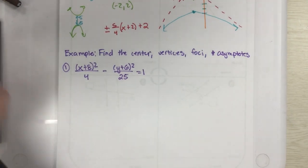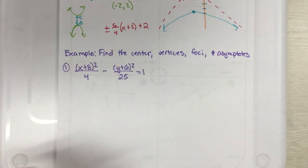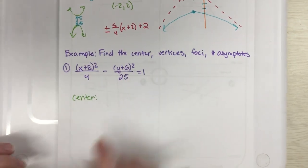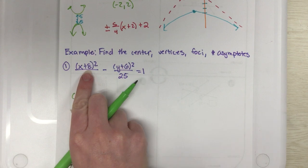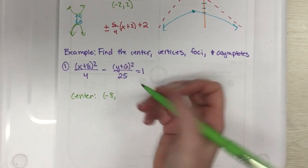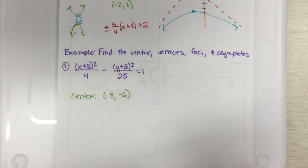All right, so let's start with the easy one, the center, because that is just in the equation for us. So this time make sure you go to the x first, so I have x plus 8, so that means my center is going to be at negative 8. I have y plus 6, so that means it's going to be at negative 6.